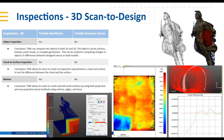Taking this a step further, similar to the 2.5D but now in full 3D, RealWorks allows users to create an inspection map between a cloud and a surface to see the differences. You can see those heat maps — particularly useful for tunneling as well, shown in the lower right screenshot, where you're taking the design and comparing it to the cloud.